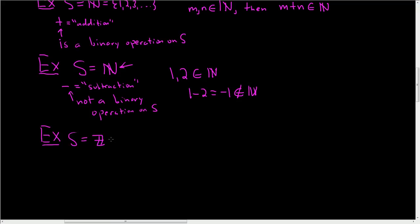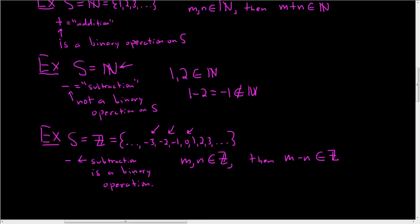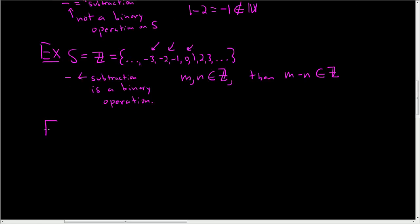Let's look at another example. If we take S to be the set of integers — all positive whole numbers, all negative integers, and zero — so for example: …−3, −2, −1, 0, 1, 2, 3… and we take subtraction again, this time subtraction is a binary operation. If you take two integers and subtract them, you also get another integer, since we're now allowing negative integers and zero.